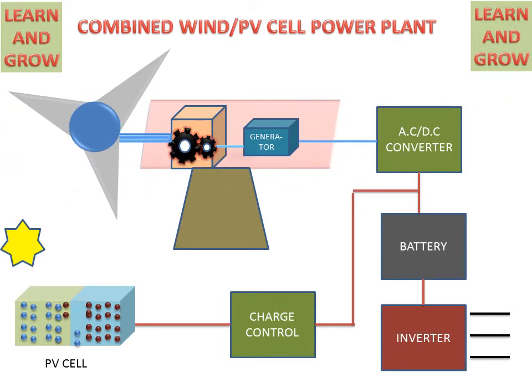When air will strike on the blades of the rotor, rotor will start rotating. And by the rotation of the rotor, gear in the gearbox start rotating. And the gear shaft is connected to the generator. Generator will produce electricity.